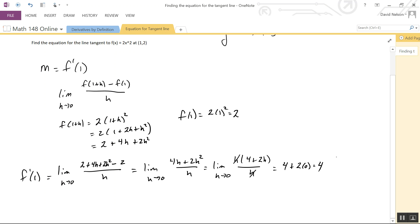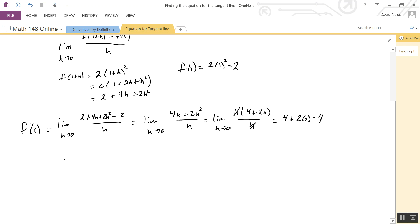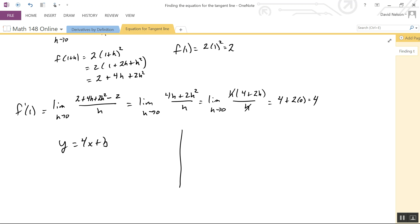So our tangent line looks like y = 4x + b. There are a couple different ways to find b. I like using y = mx + b because I already know that formula - it's the one I use all the time. I know the equation has to go through the point (1,2).